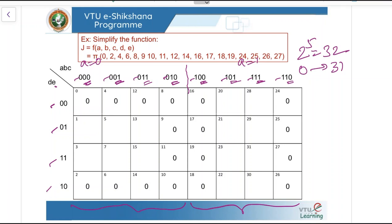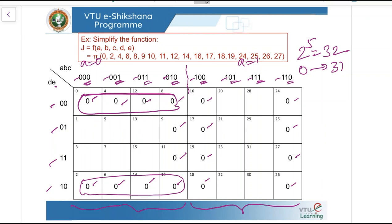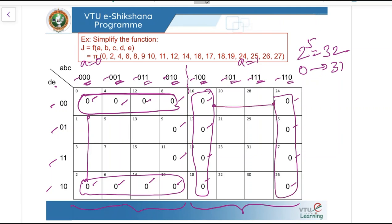Let us verify all the max terms are loaded: 0, 2, 4, 6, 8, 9, 10, 11, 12, 14, 16, 17, 18, 19, 24, 25, 26, and 27. Let us start grouping. These 4 and these 4 can be grouped together — these two groups are logically adjacent. Similarly, these 4 zeros and these 4 zeros can be grouped together and are logically adjacent. And these 4 zeros, these 4 zeros, and these 4 zeros are logically adjacent with each other, so these two groups form a combined group.